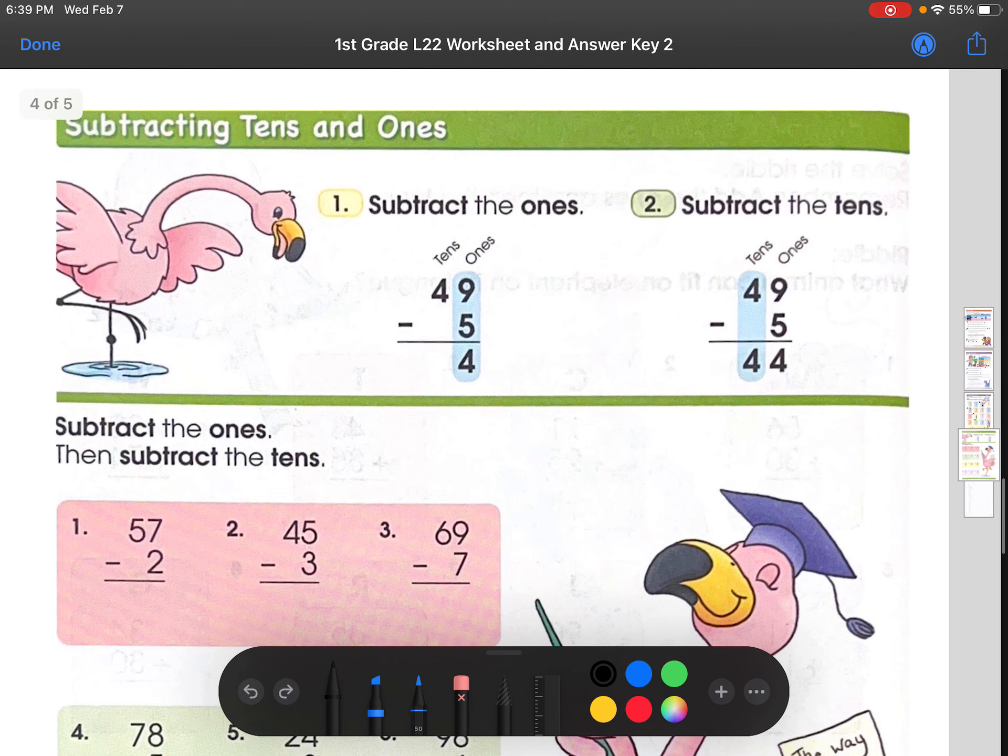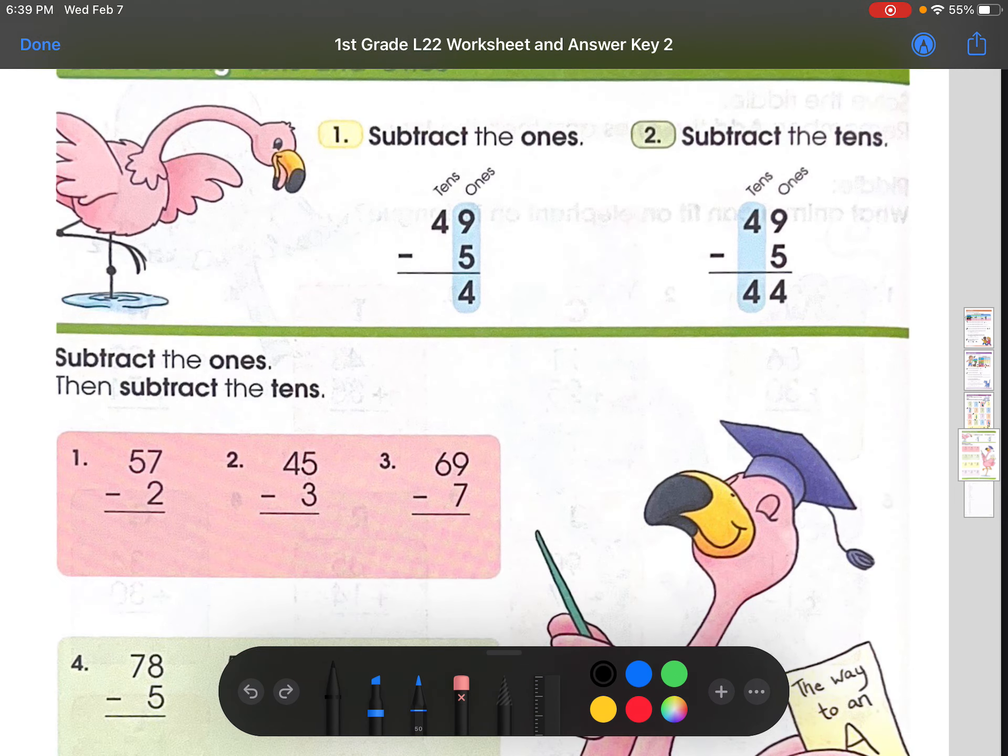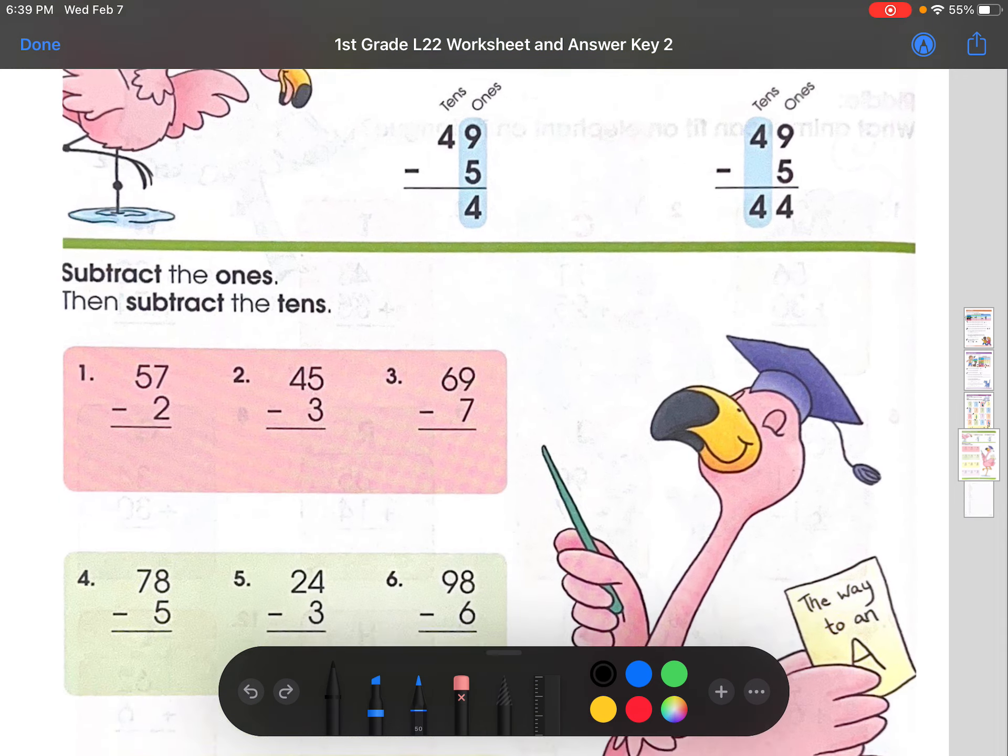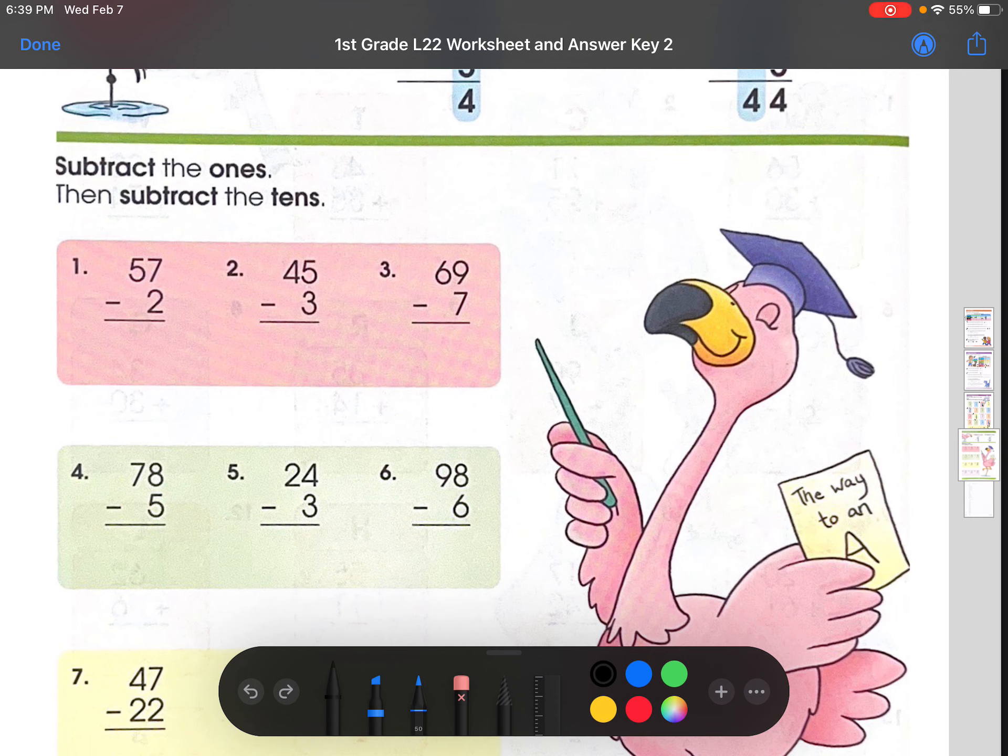Subtracting 10s and 1s. So this is the opposite of adding, where we subtract. Again, it's all explanatory. It's the same thing as when you add. You just do the 1s place first and then the 10s place. So let's just get straight into it.